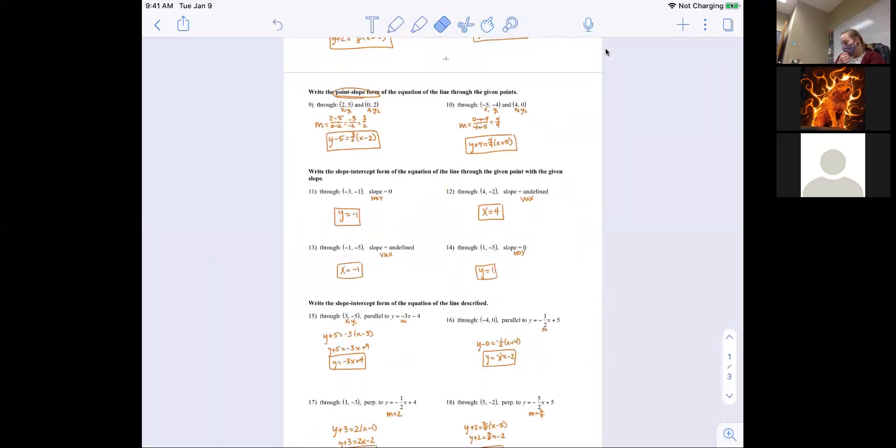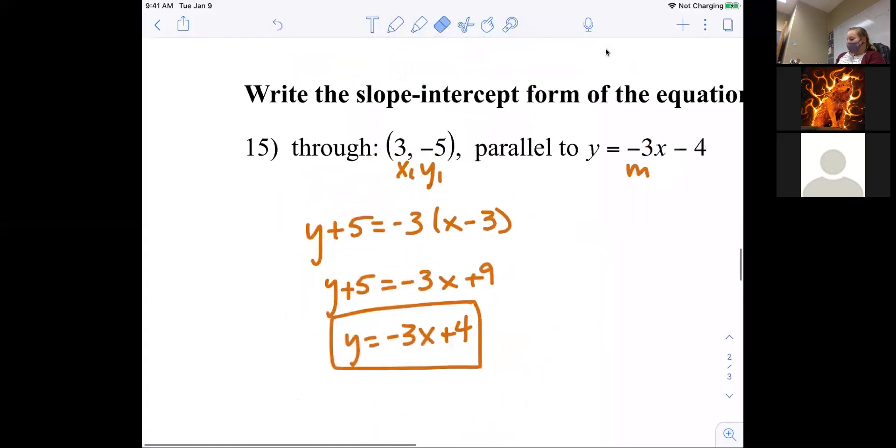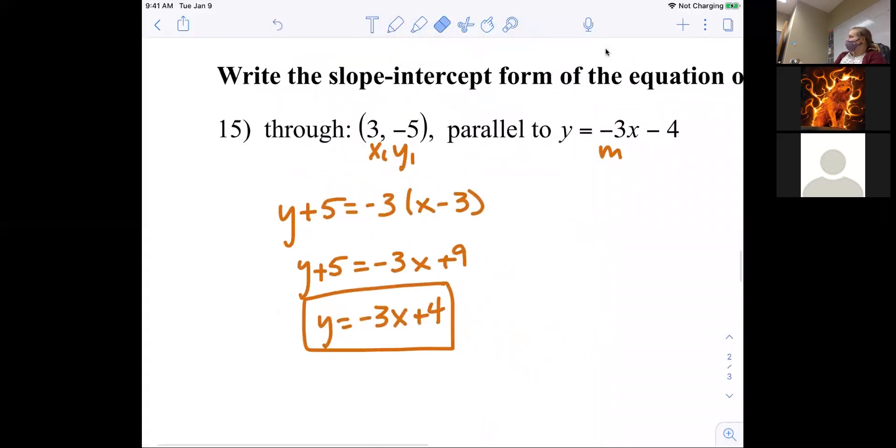Problem 15. It says write the slope intercept form of the equation. It goes through the point (3, -5), and it's parallel to y equals negative 3x minus 4. The being parallel part, I only care about the slope, because I'm going to use that slope in this problem. I'm going to use the same slope. Then I'm going to use the new point (3, -5) to help me find my b. That's my x1 and my y1. So I plugged it into point slope form, and then I was able to simplify it as slope intercept.